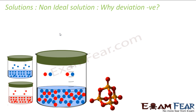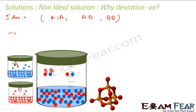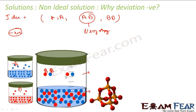For negative deviation, the opposite happens. In the ideal case the A-A, A-B, and B-B attractions are all the same, but in negative deviation the A-B attraction becomes very strong. Neither A will allow B to go out nor will B allow A to leave the liquid phase. So the vapor phase has very few molecules of A and B, because the A-B attraction holds them tightly and they cannot easily move to the vapor space.